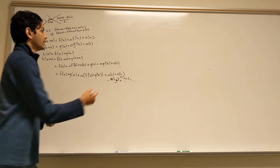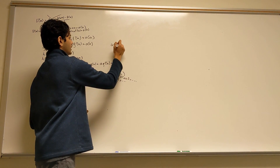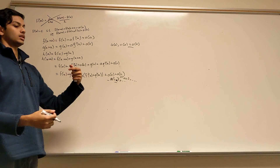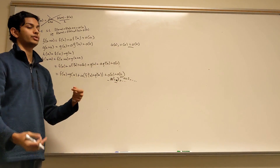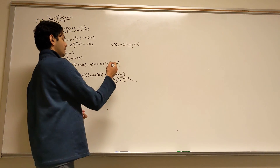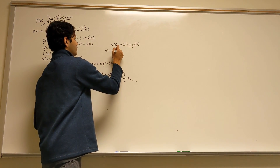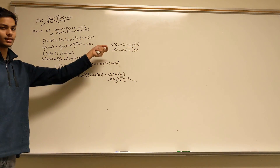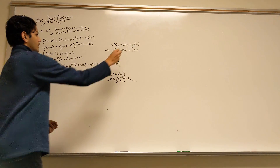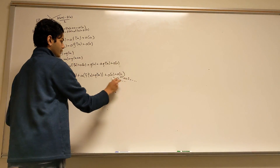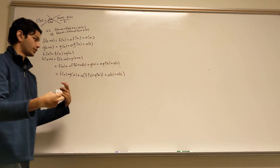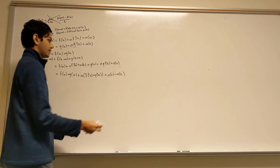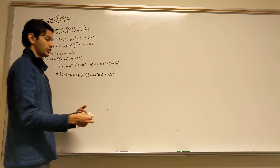You can check on your own that if you have two functions u of a and b of a, and these are both o of a — meaning the limit as a goes to zero of these two divided by a is zero, which means that these two go to zero faster than a — then that implies that u of a plus b of a is also o of a. You can verify that the limit of this divided by a also goes to zero. Essentially, if you have two functions which are both o of a, then the sum of those will also go to zero faster than a. So o of a plus o of a is just some other function which is also o of a.